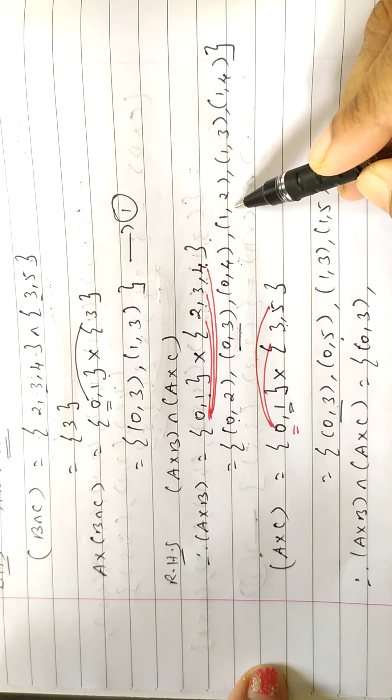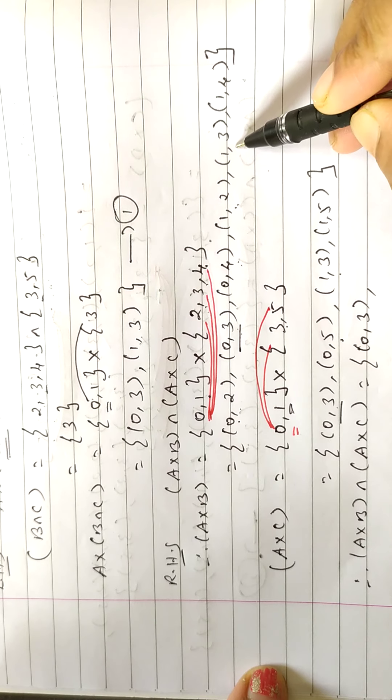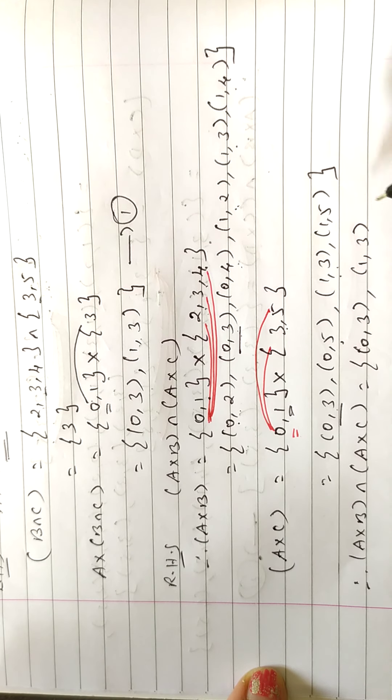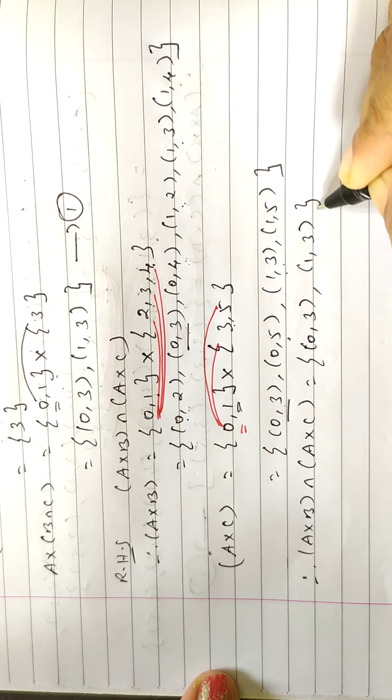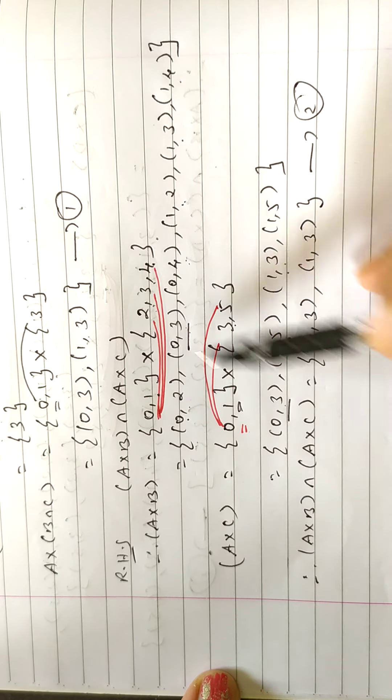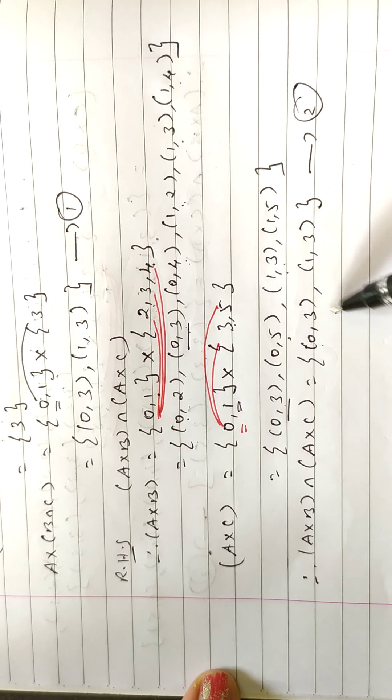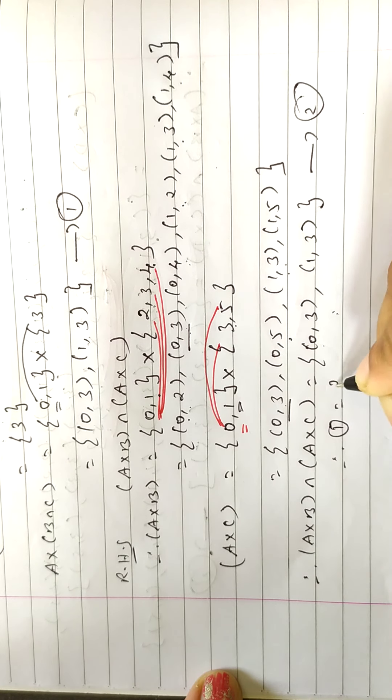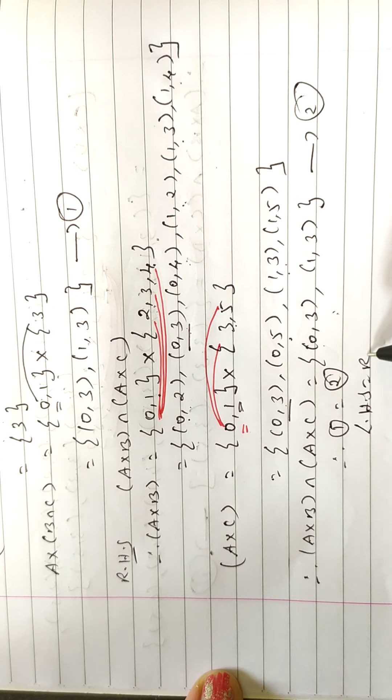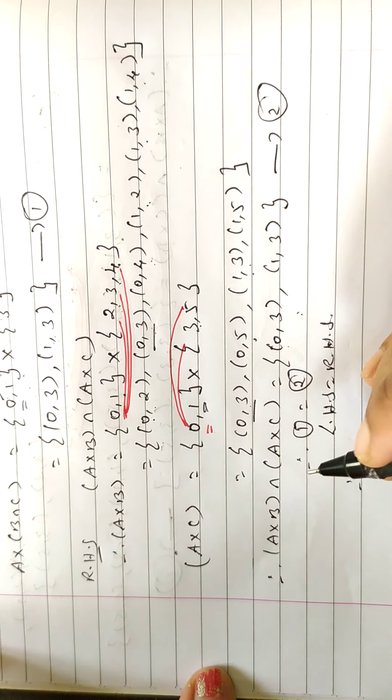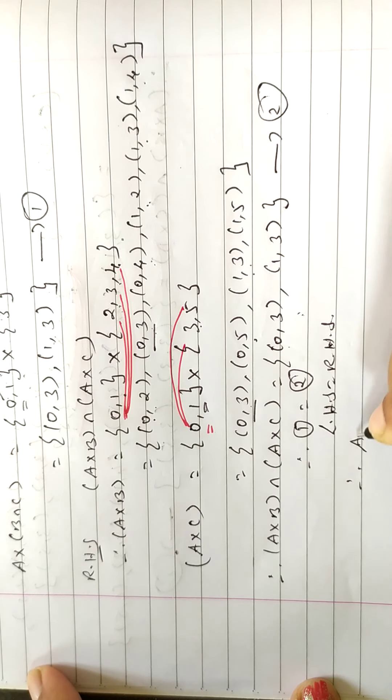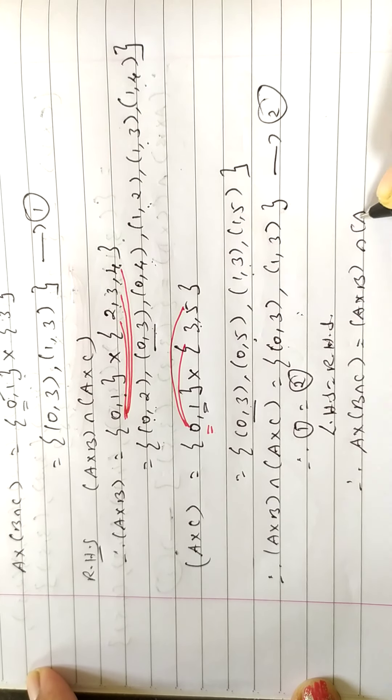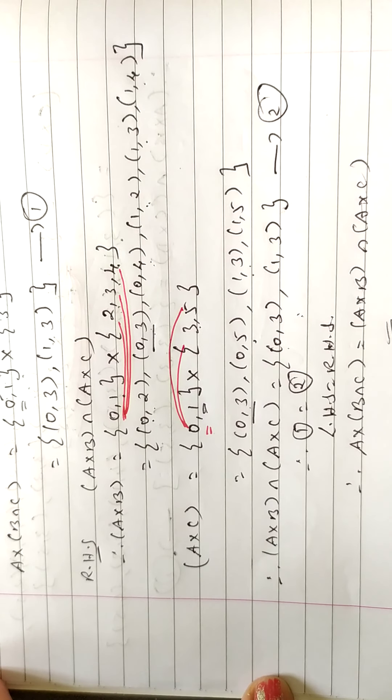Therefore A cross B intersection A cross C. The common elements are 0,3 and 1,3, so this is 2. Now you see 1 and 2, both are equal. Here is 0,3, here is 0,3, here is 1,3. So we have 1 is equal to 2, that is left hand side is equal to right hand side. Therefore, A cross B intersection C equal to A cross B intersection A cross C. So this is the answer.